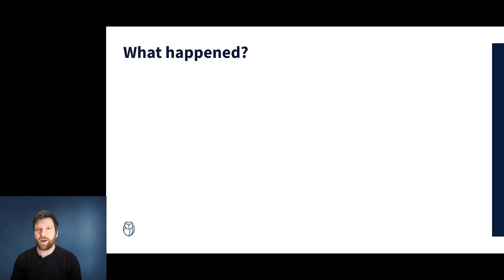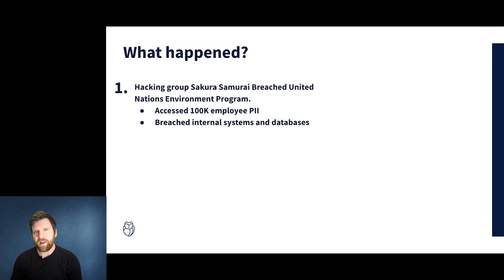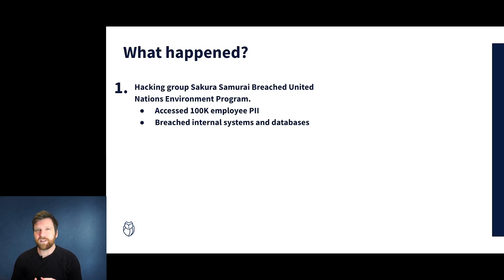This attack was conducted by the ethical hacking group Sakura Samurai, and they were able to take over a number of databases, internal systems, and also gain access to private password-protected Git repositories. They did this because the UN has a vulnerability disclosure program and also a hall of fame.